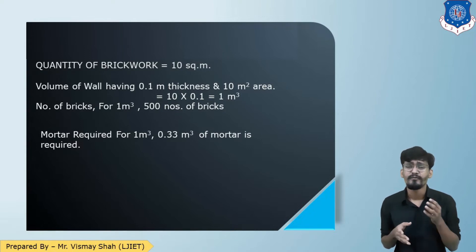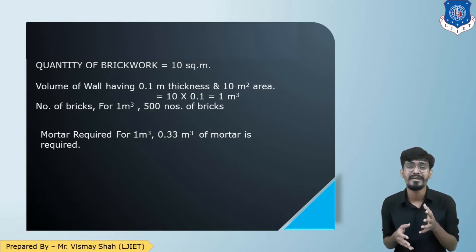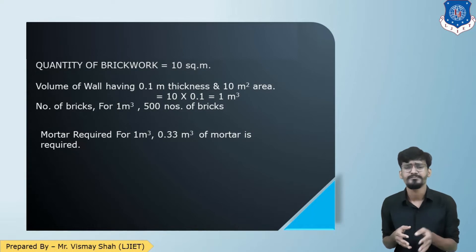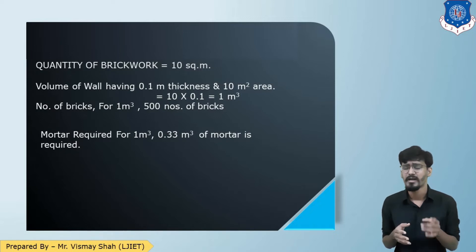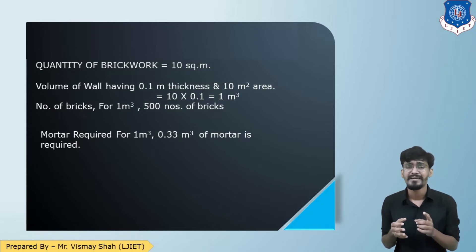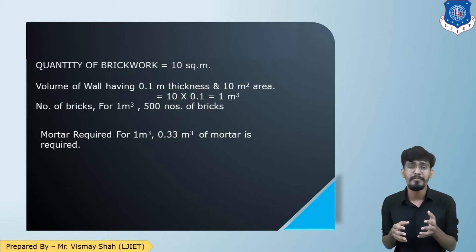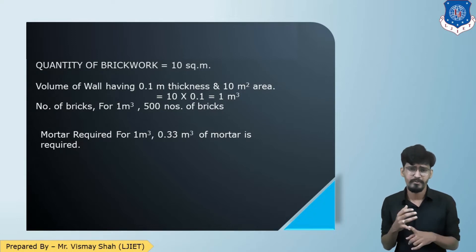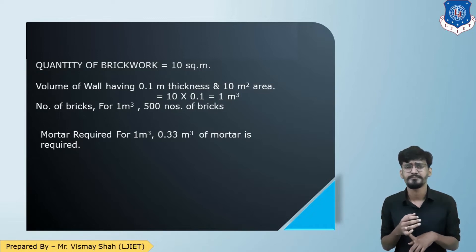We know that for 1 cubic meter of brickwork, 500 bricks are required and 0.33 cubic meter of mortar is required. You don't have to re-prove these values in the sum — you can directly write 500 bricks and 0.33 cubic meter of mortar.